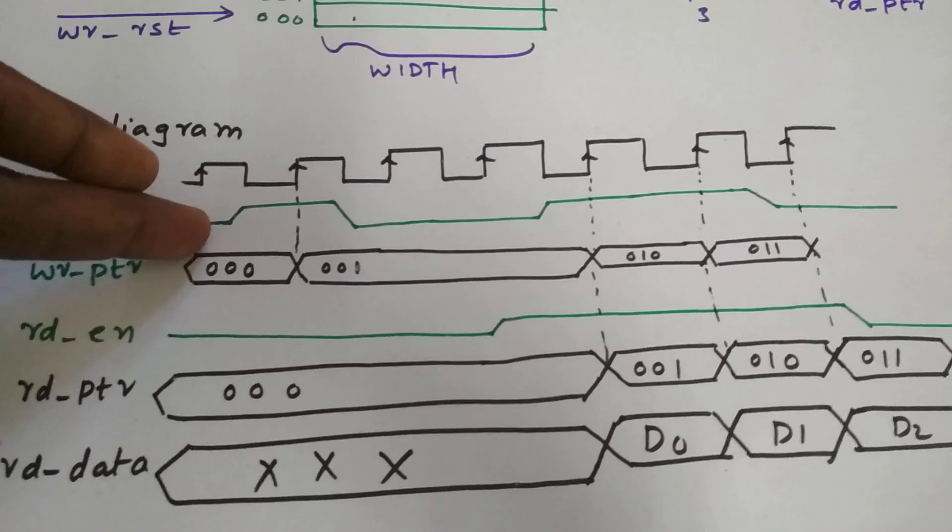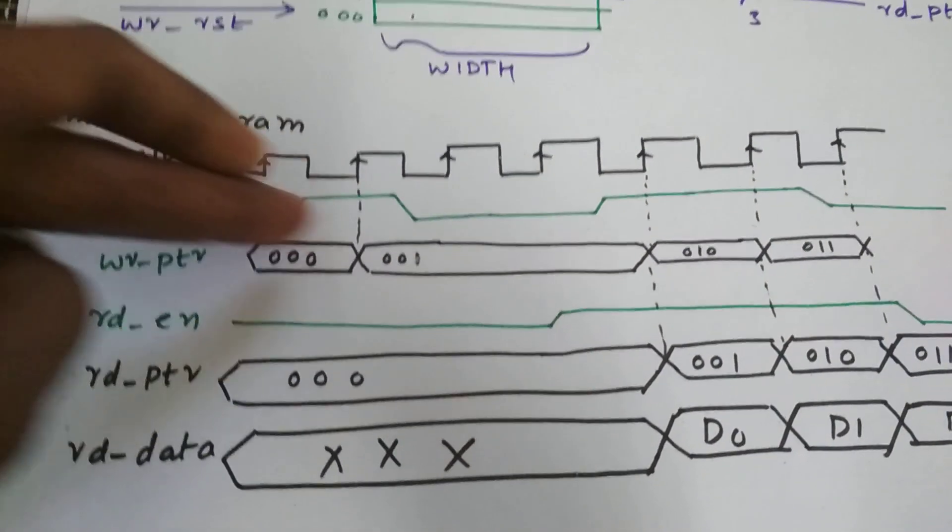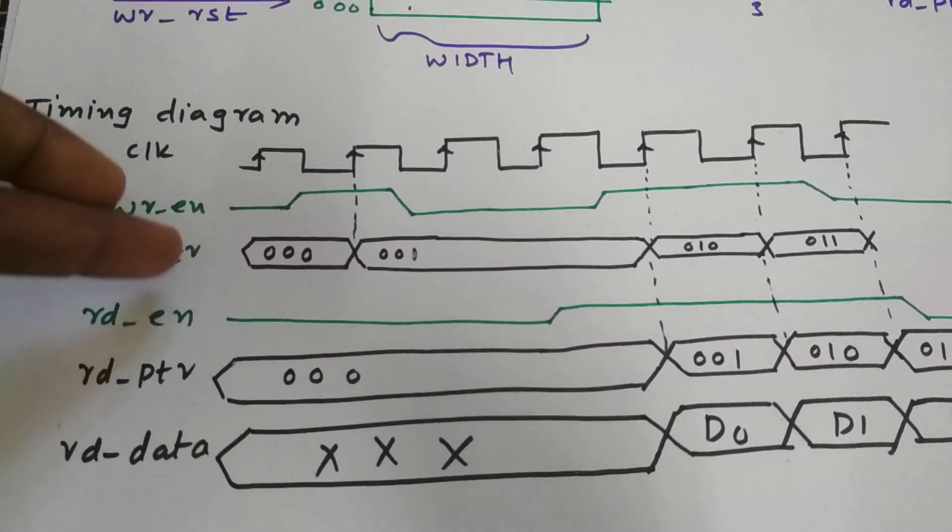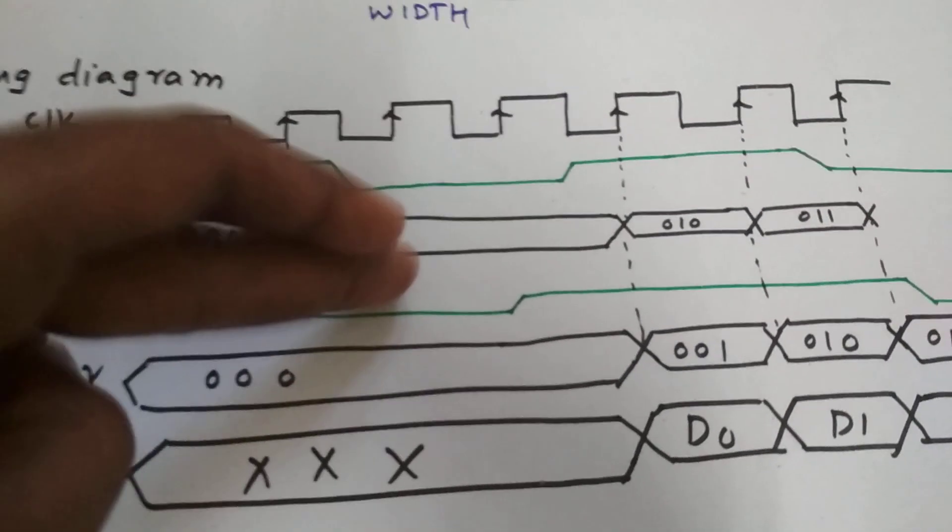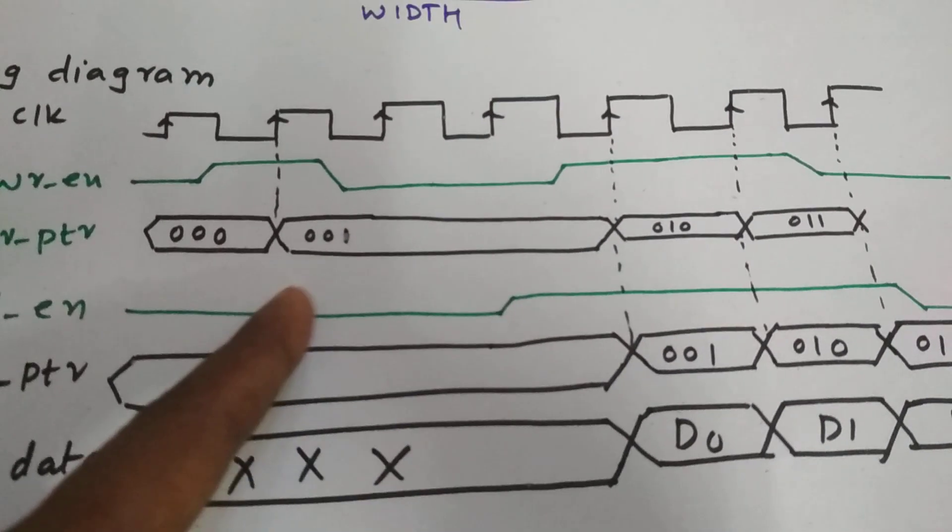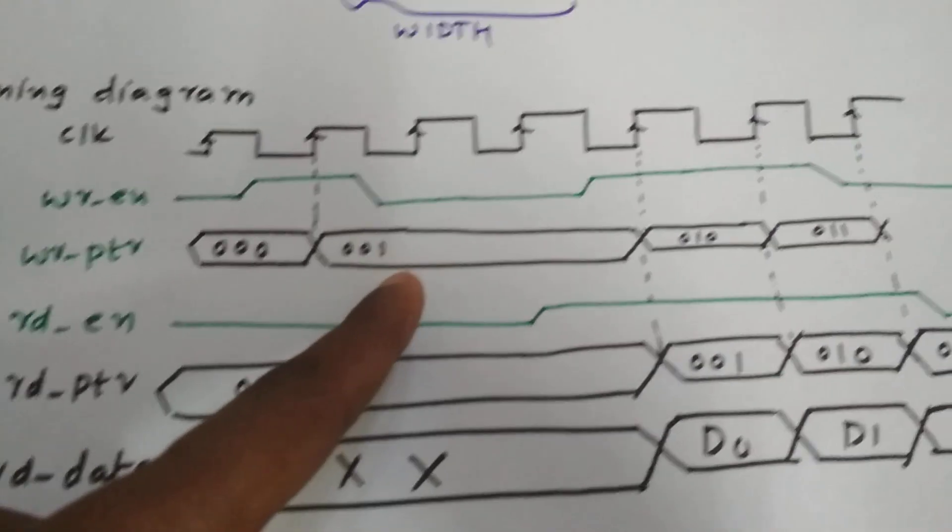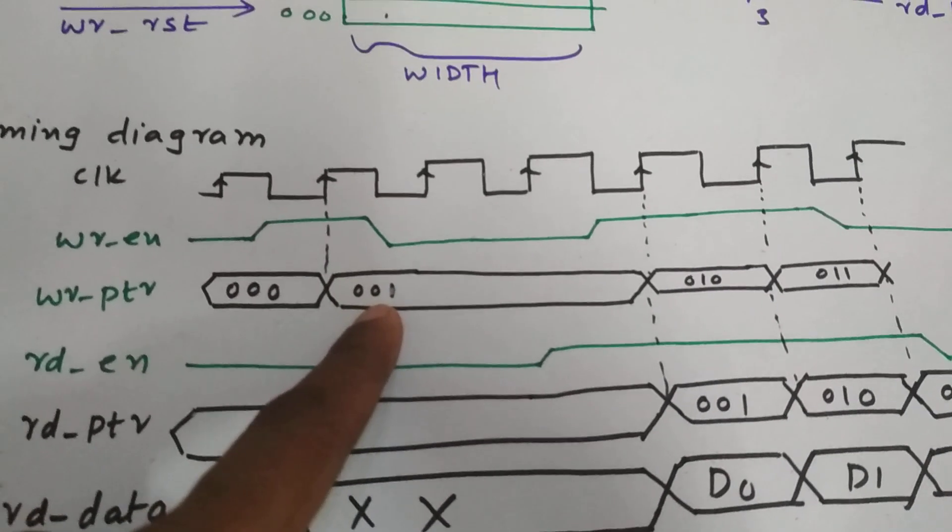So when write enable is high, at that time, the write pointer will be incremented to the different location from 000 to 001. So when this happens, write data will be written into 001.